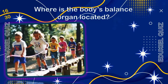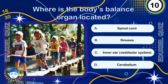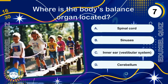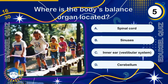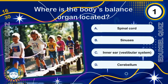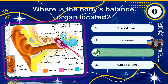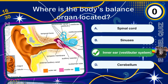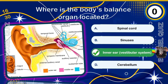Where is the body's balance organ located? Tiny structures called semicircular canals detect head movements, while otolith organs sense gravity and linear acceleration. Dysfunction can cause vertigo and dizziness.